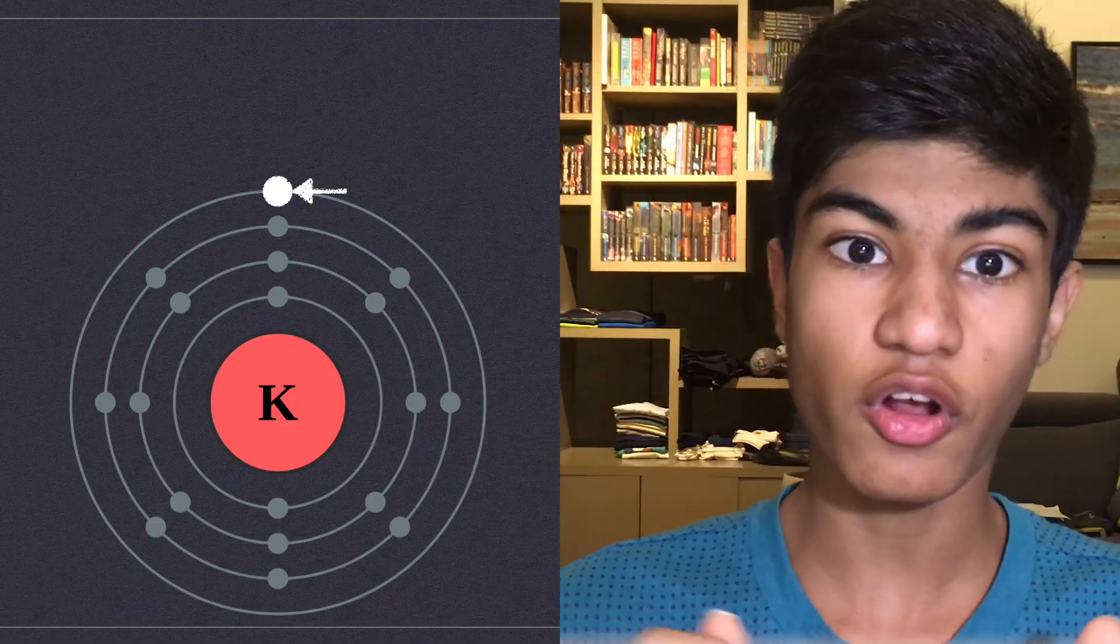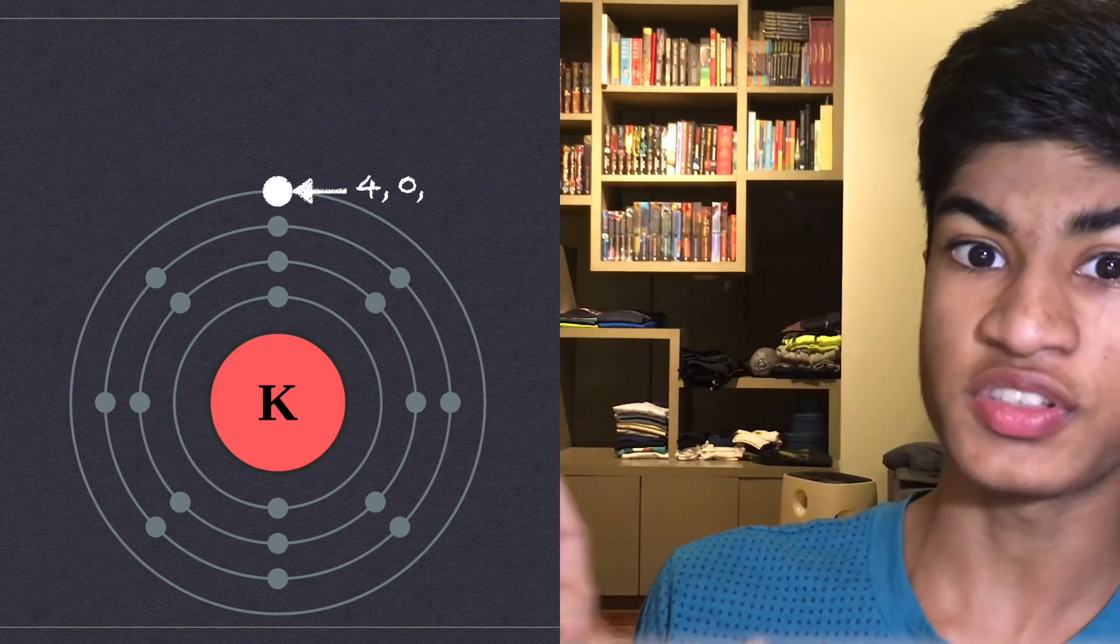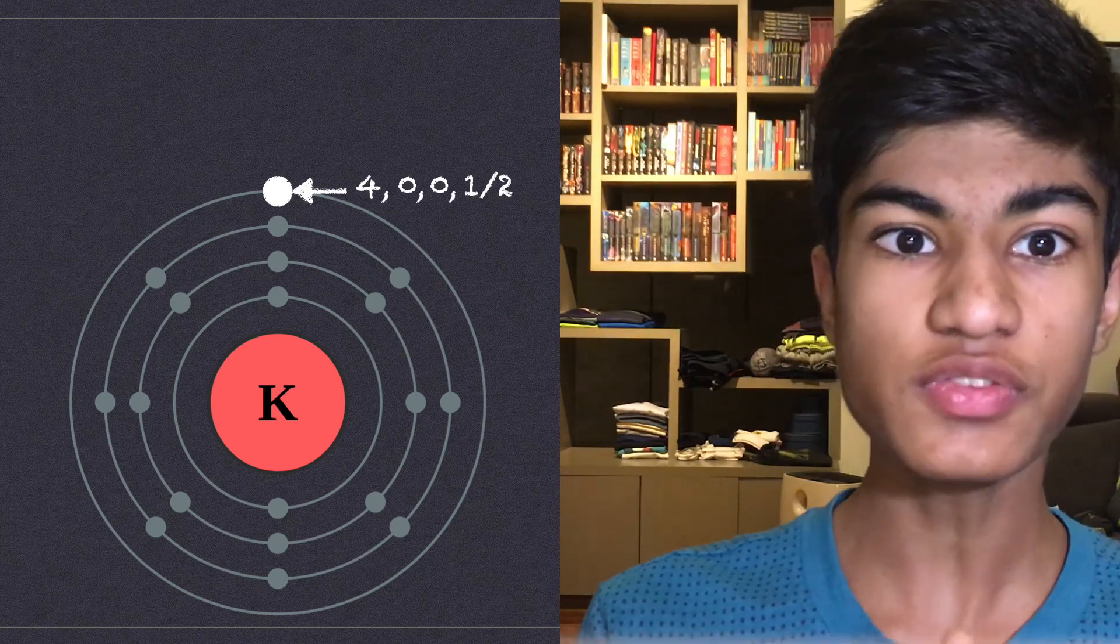Take an example of an electron on a potassium atom. Four, zero, zero, half. Each of these values is a quantum number. But what exactly do these mean? Let's break it down.